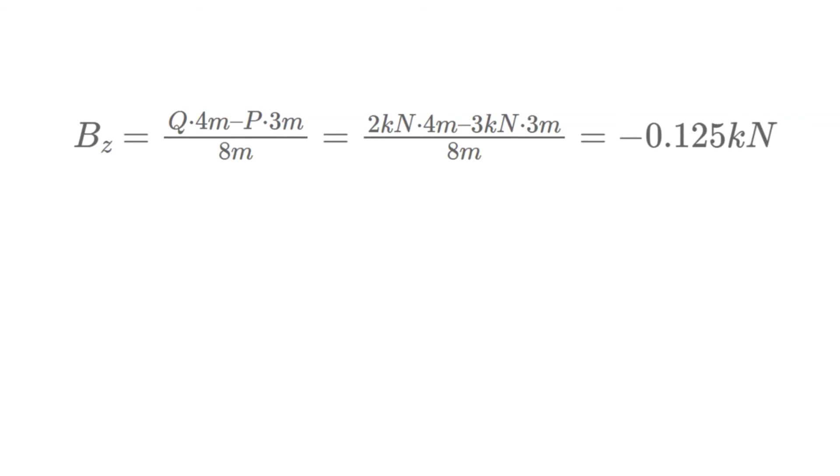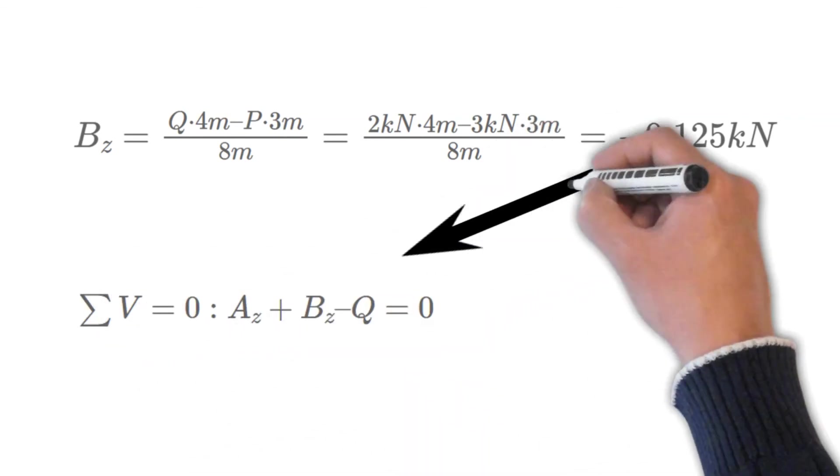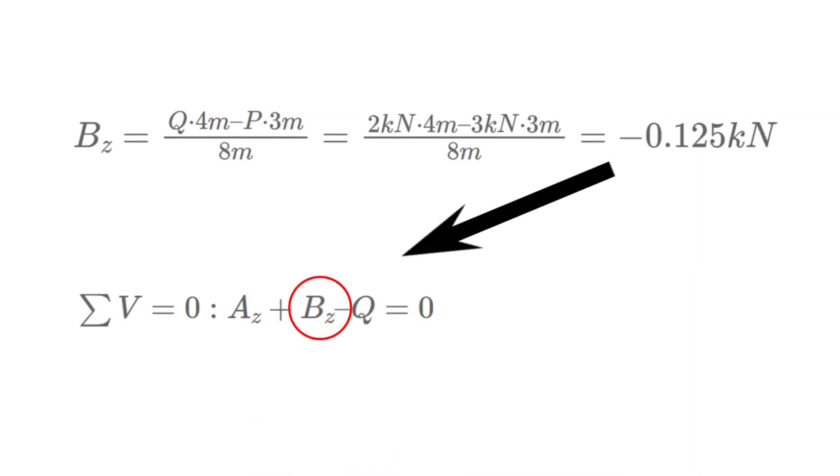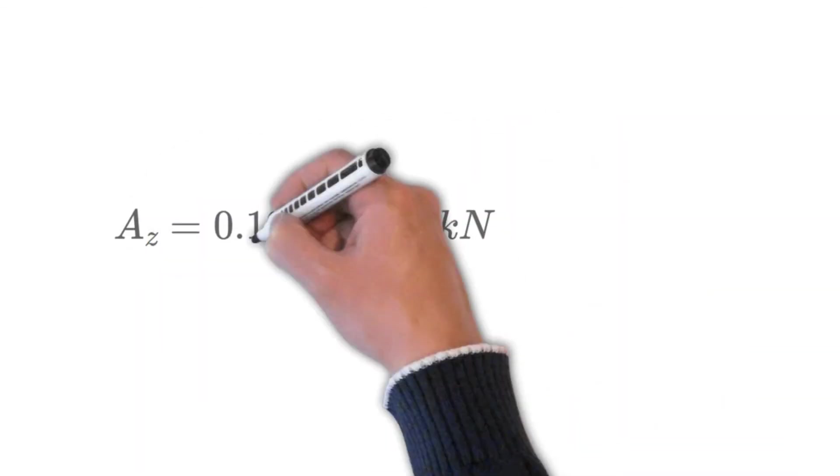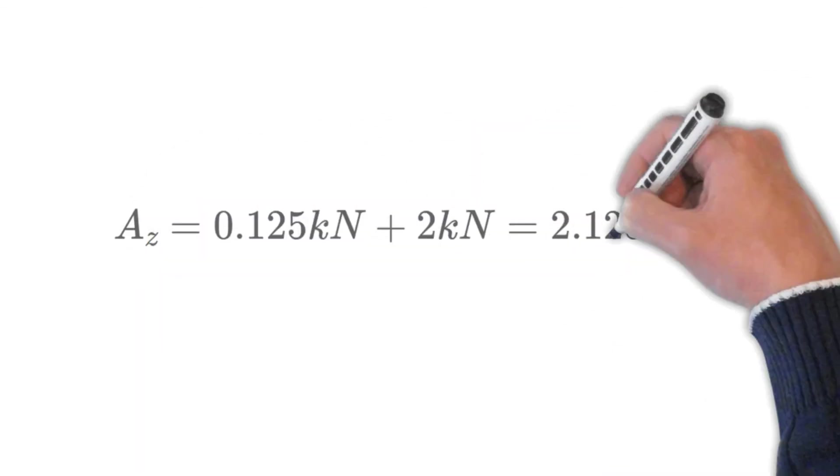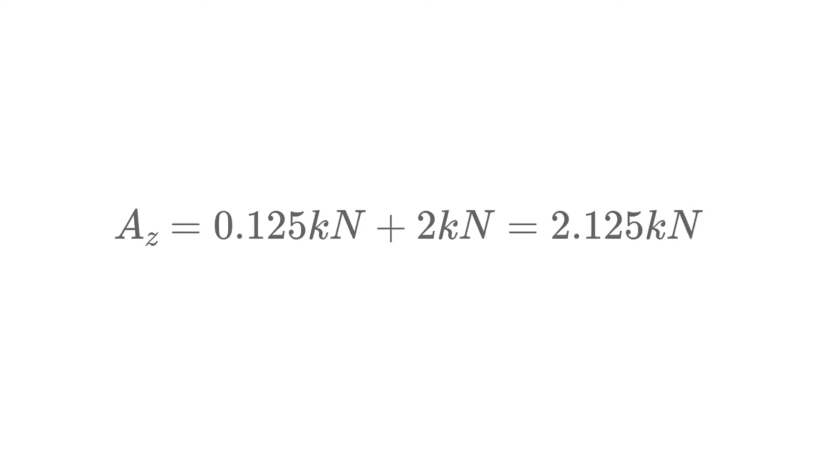Now that we have Bz we actually can use the vertical equilibrium to calculate Az. So the sum of all vertical forces is Az plus Bz minus Q equals zero. Now if we insert Bz and Q we can calculate Az as 0.125 kN plus 2 kN equals 2.125 kN.